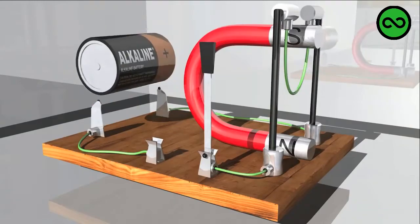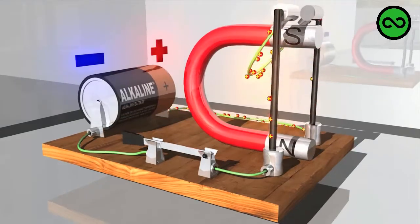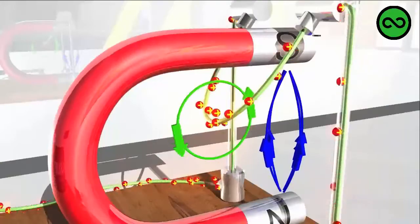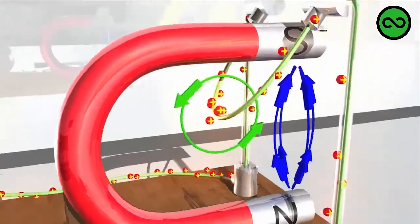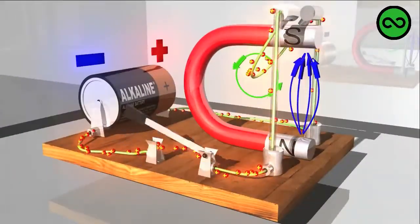If we reverse the direction of the current, the magnetic field it generates will turn in the opposite direction, causing, in turn, the pendulum to swing in the opposite direction.